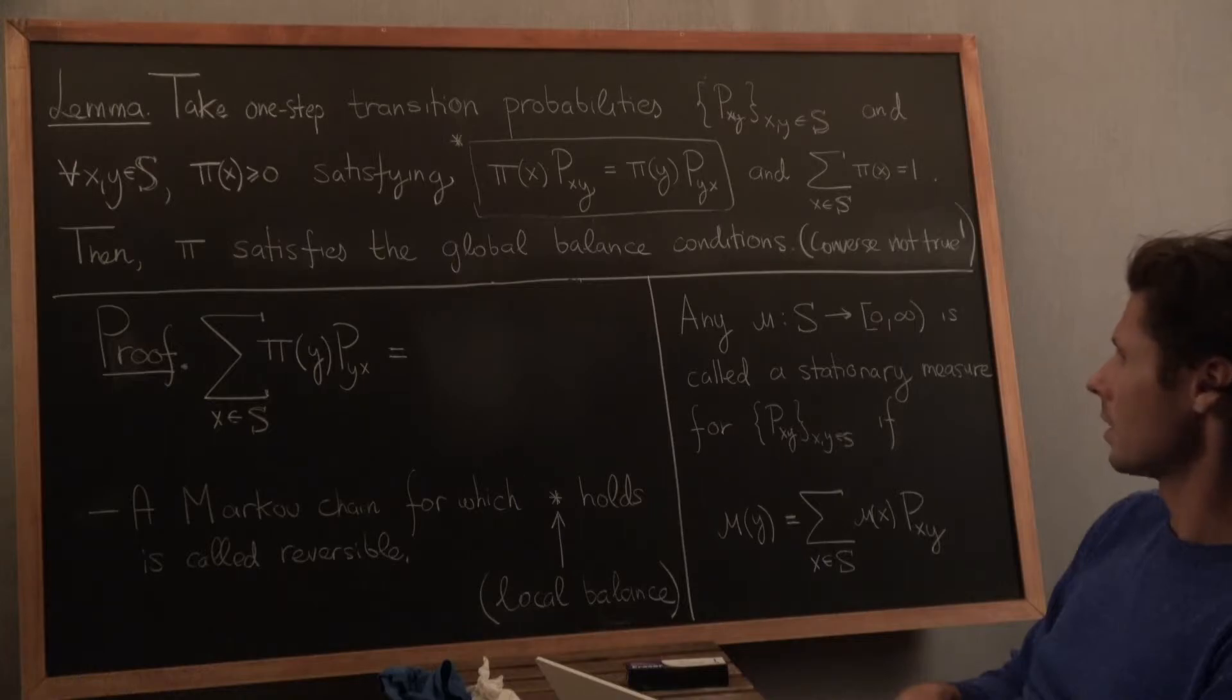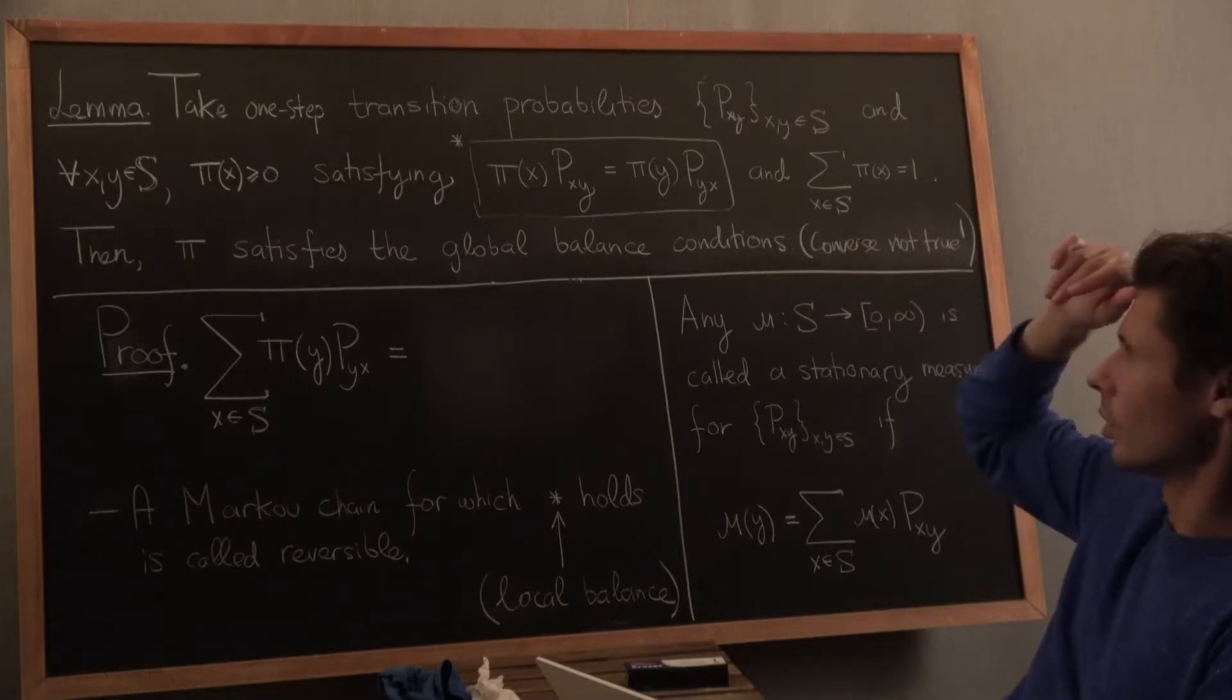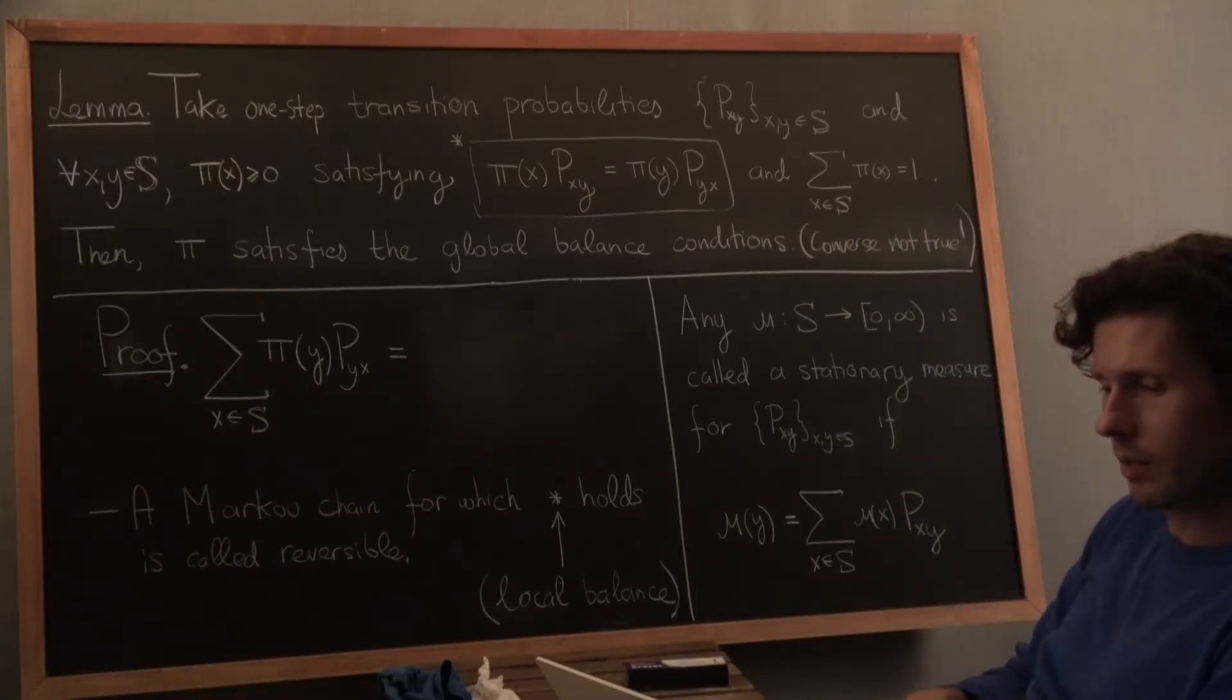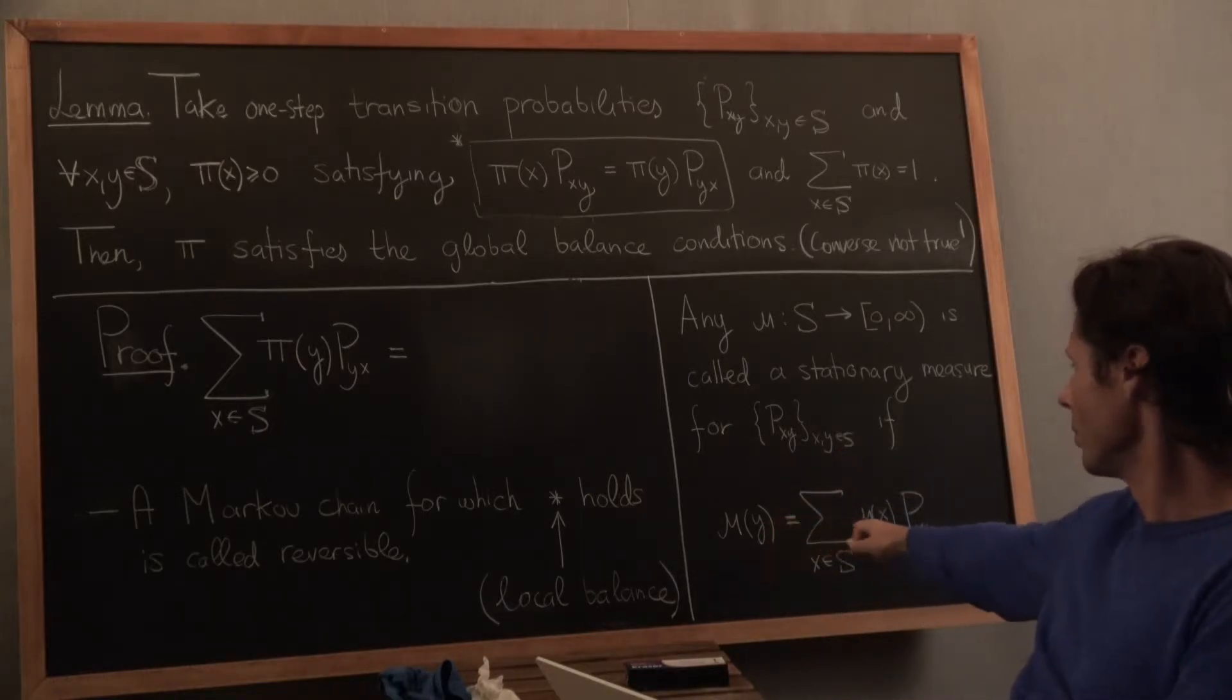In any case, let's get to the proof now. What do we want to do? We want to start with local balance, equation star, and we want to get to the global balance condition. And hopefully you remember what that is. We've been using it in the last couple of segments to prove various lemmas. It is essentially a condition just like this one, but with mu replaced by pi.